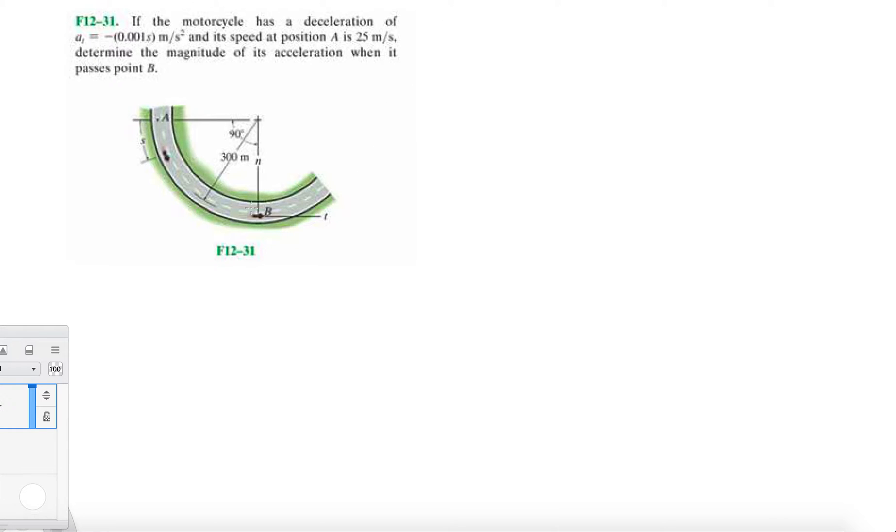We're given some conditions at A and some other information. Let's write down the givens. The radius of curvature is 300 meters. The speed at position A is 25 meters per second. The tangential acceleration is minus 0.001s.